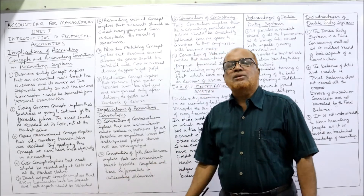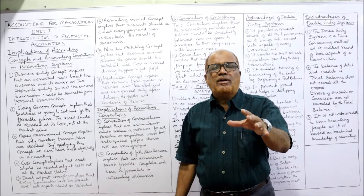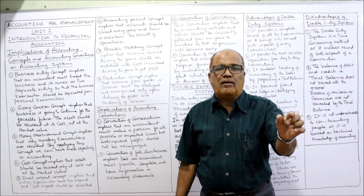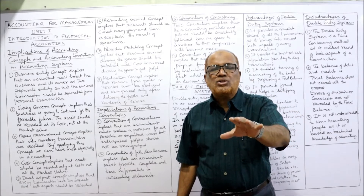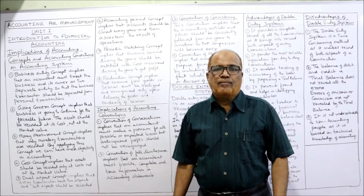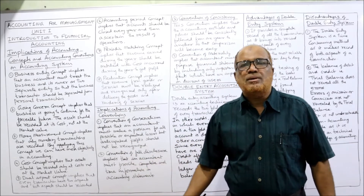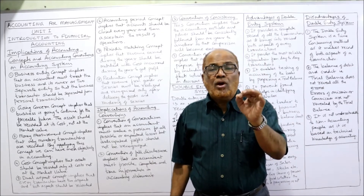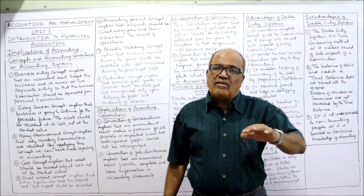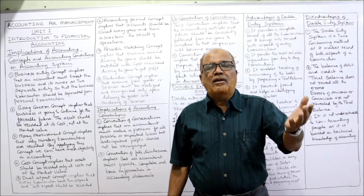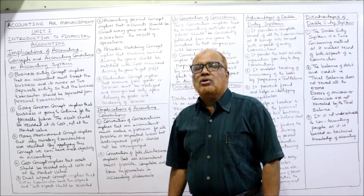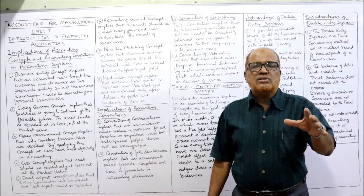The next is the money measurement concept. According to this concept, only monetary transactions will be recorded. Non-monetary transactions, even if they are important, will not be recorded. The effect of this concept is that we can get objective results of operations; otherwise, subjectivity will creep in if we include non-monetary transactions.